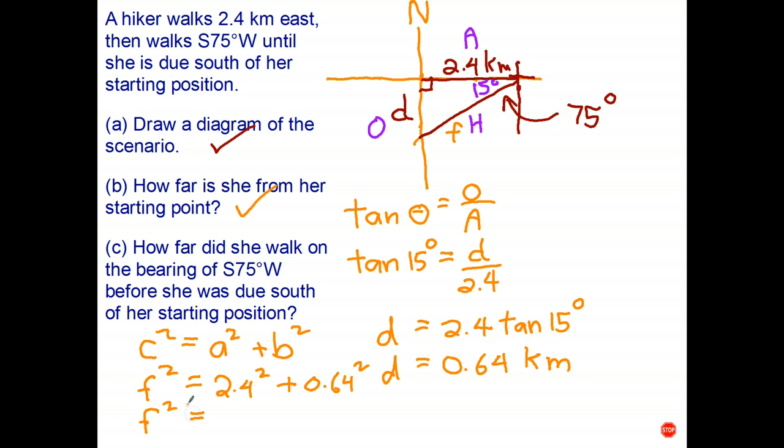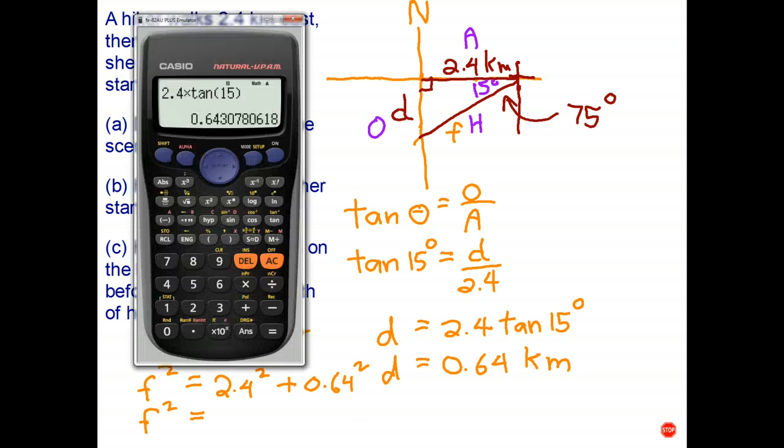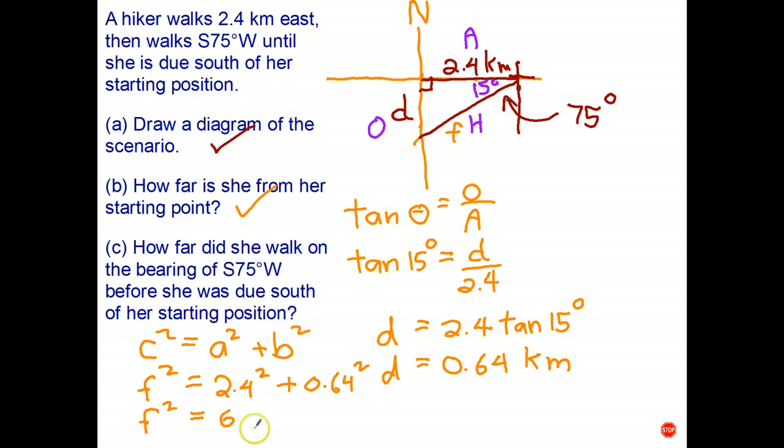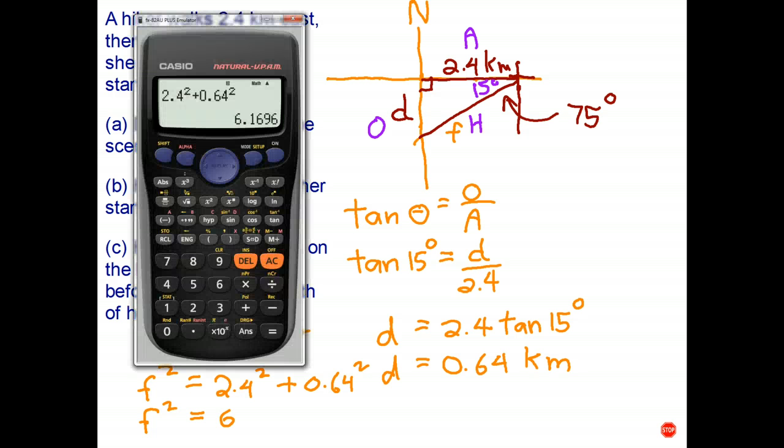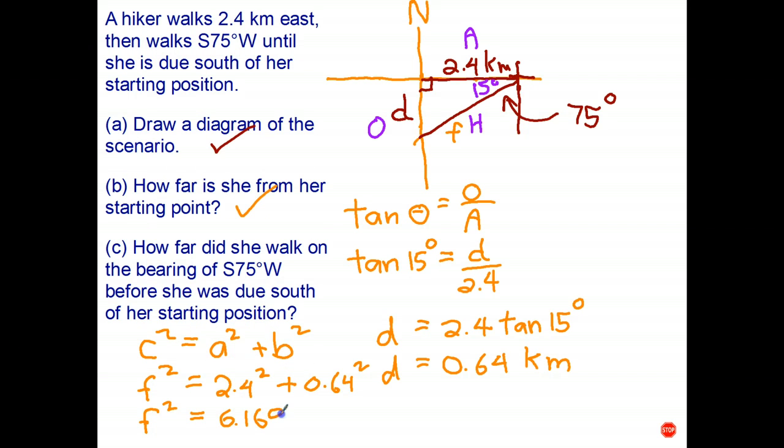Let's use our calculator to work out the value of that expression. I've got 2.4 squared plus 0.64 squared. Looks like I've done that correctly. And I get 6.1696.